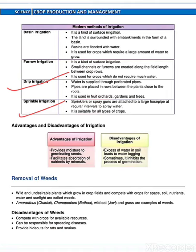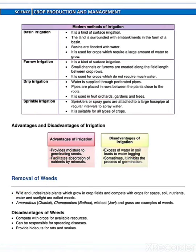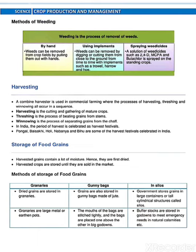Now advantages and disadvantages of irrigation. Then after removal of weeds. We all know that undesirable plants which grow in crop fields are known as weeds. Here there are some disadvantages of weeds. Methods of weeding — weeding is the process of removal of weeds. It is done by hand, by using implements, and by spraying weedicides.